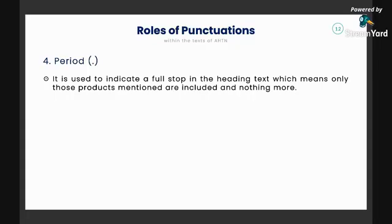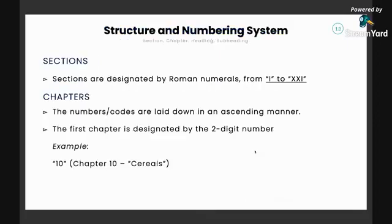For the period, it is used to indicate a full stop in the heading text, which means only those products mentioned are included and nothing more. This is different from the semicolon — the period marks the end of a sentence with no further related items expected after it, while the semicolon indicates another group of words to be described right after. So we have four punctuations used in the tariff nomenclature: comma, semicolon, colon, and period.